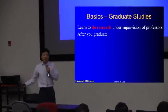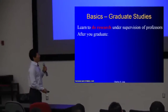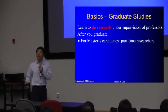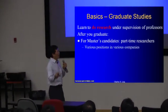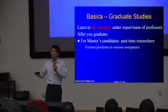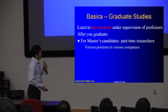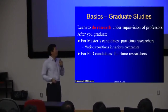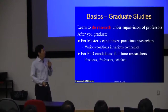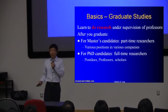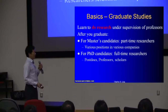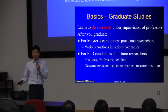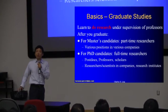And what's your future like? After you graduate, if you are a master's student, you are like a part-time researcher. You can do some research, maybe in various companies that have research positions. If you are a PhD student, then usually after you graduate you become a full-time researcher — you could be, for example, a postdoc, professor, or scholar. Many large companies also hire researchers or scientists to do research. So you will be more or less doing research as your career.